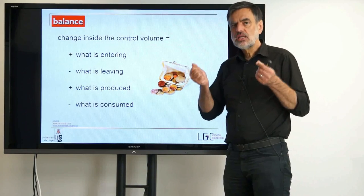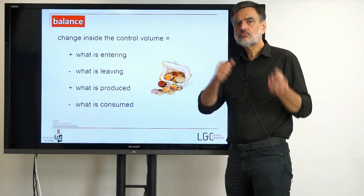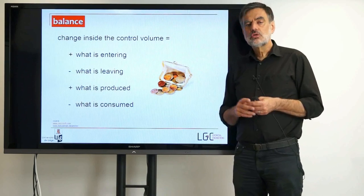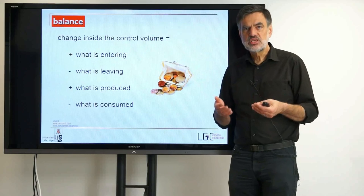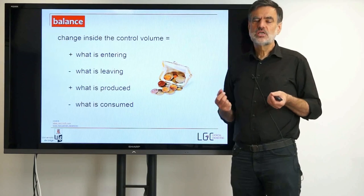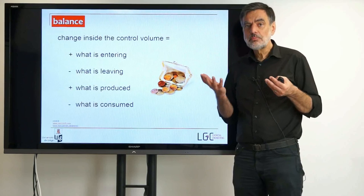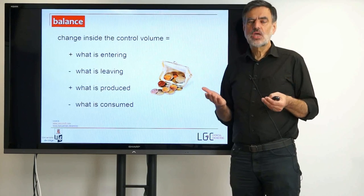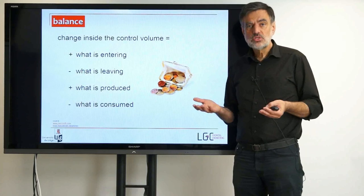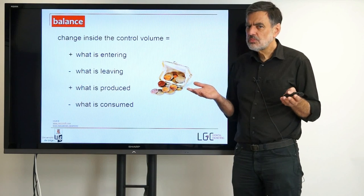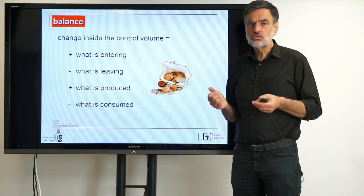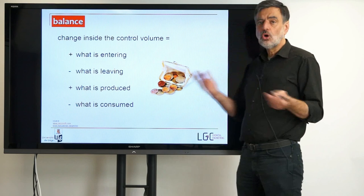Now the question is which property to balance — what are the variables we set up the balance for? The easiest are properties that are conserved. Conserved quantities — we know some of them: mass, energy, momentum — presumably from a physics course. The question is how fundamental are these statements and what is the basis for these conserved quantities.